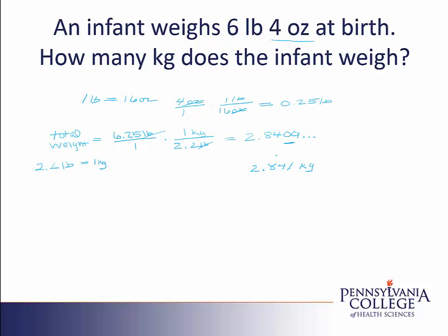When we round to the thousandths place, what we're truly doing is rounding to the nearest gram. So we're being much more precise with our measurement, and we work much more precisely with our original measurement by measuring it not to the whole pound, but to the nearest ounce.